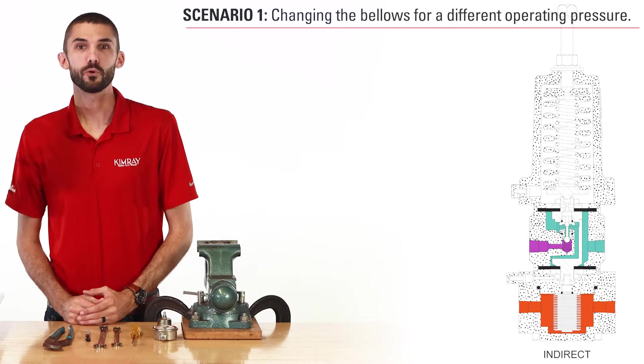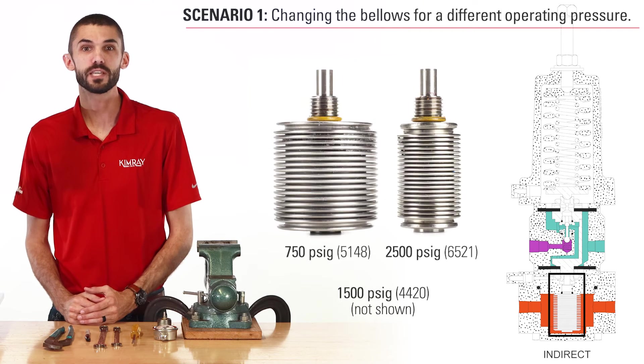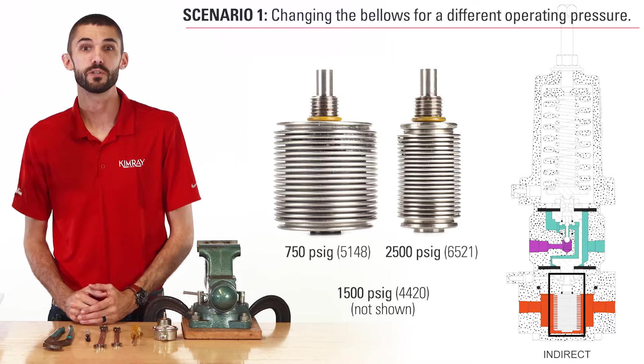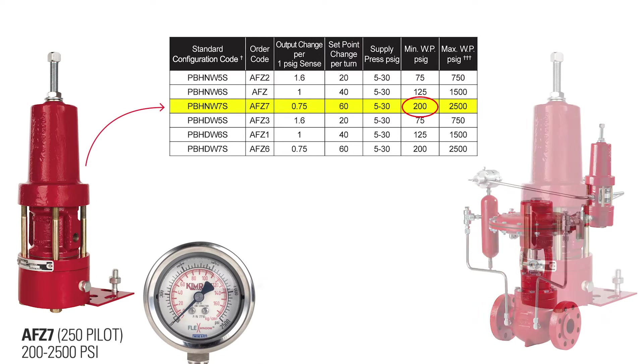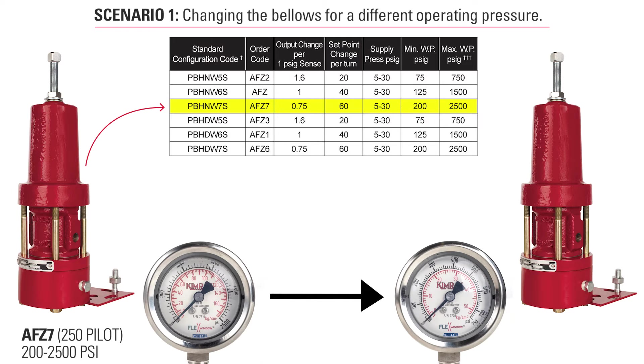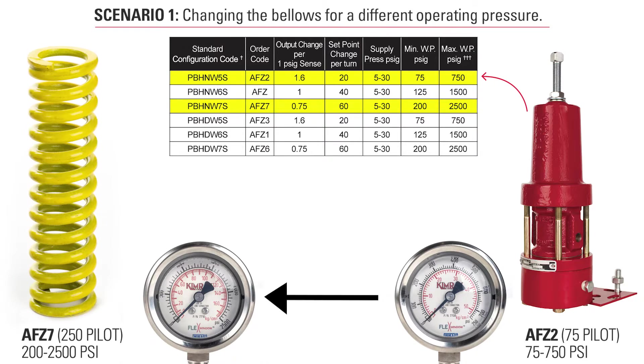In the bellows controlled pressure pilot, the bellows itself can be changed to better suit your operating conditions. This could be useful if you were previously using a 250 pilot and now needed to control pressure below 200 psi. For this scenario we're going to be converting a 250 pilot to a 75 pilot which will then operate from 75 to 750 psi. The same process can be used to convert a 75 pilot to a 250 pilot but you will also need to have a spring ready to install.